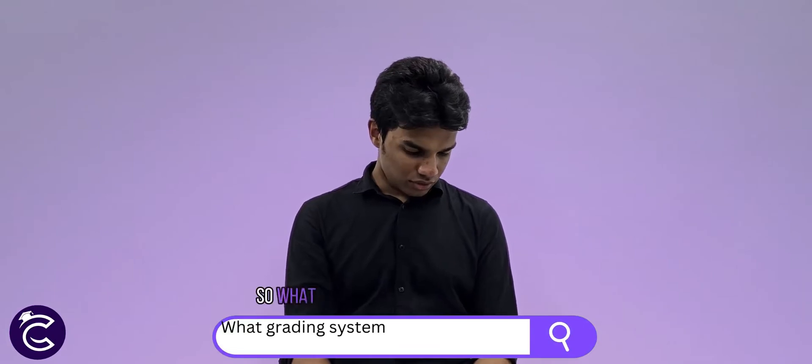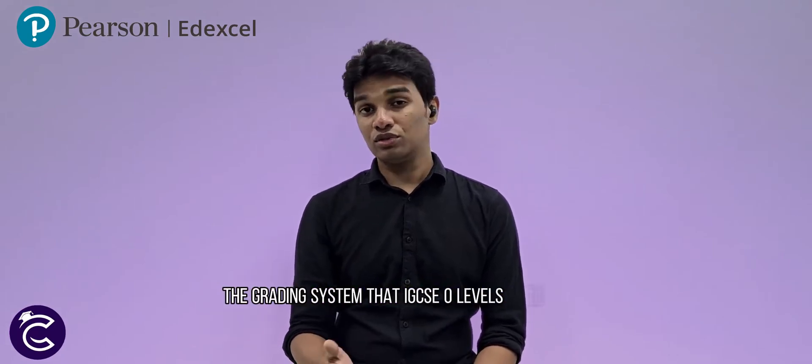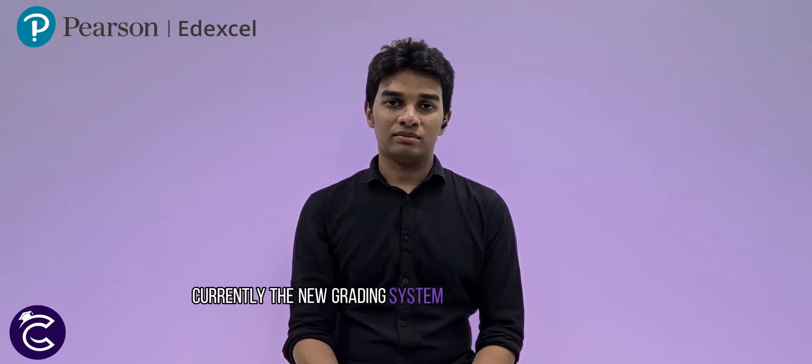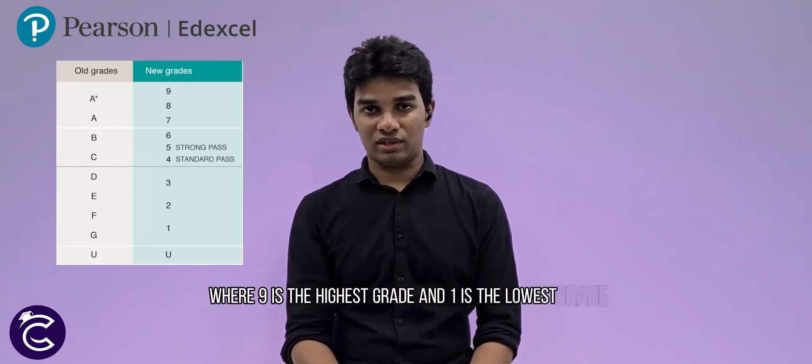So what weighting system does IGCSE use for the international programs? The weighting system that IGCSE used previously was a scale from A* to U. Now currently, the new weighting system is different — it is a scale from 9 to 1, where 9 is the highest weight and 1 is the lowest weight.